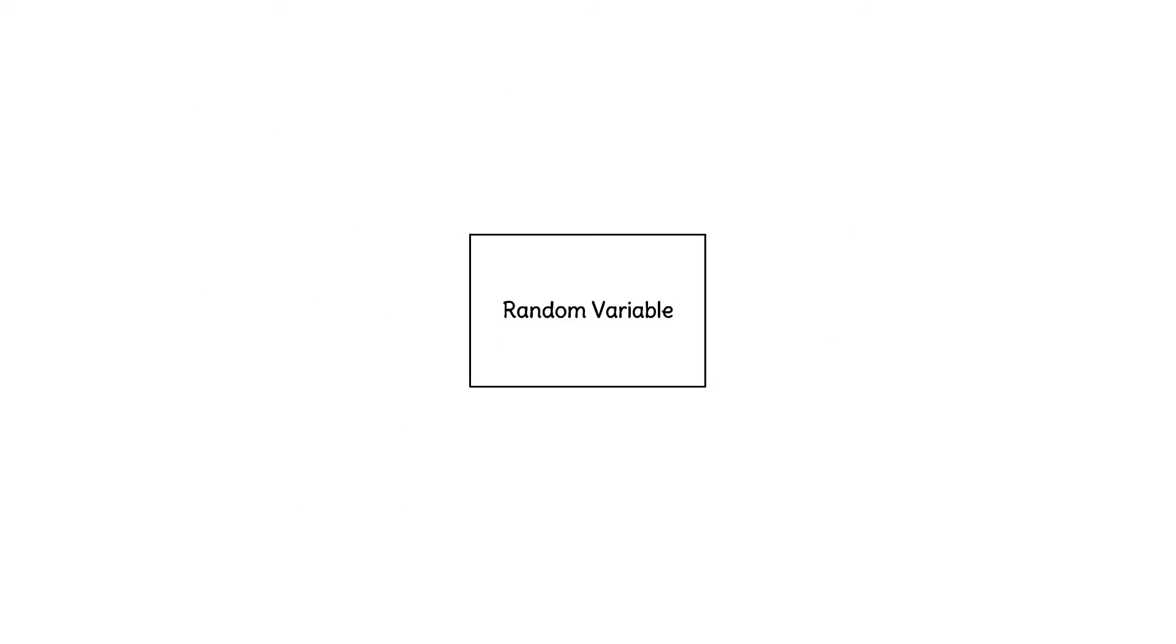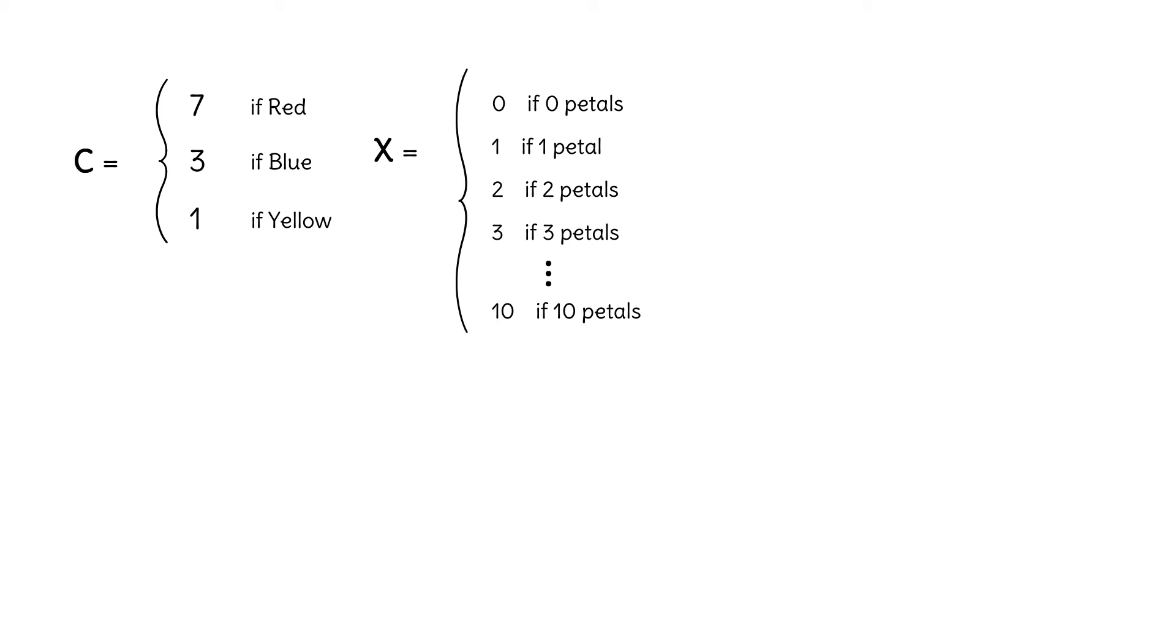Remember, a random variable is a function that takes the results of a random process in the world as input and assigns a number to each result. We get to decide what numbers to assign. If we can list the results in order, like the three colors or the numbers of the petals, then they are countable, which means we have a discrete random variable.